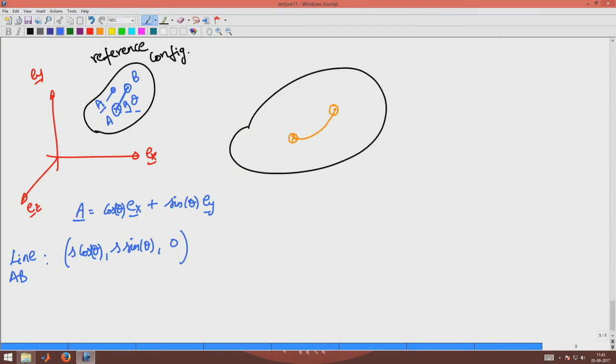Now this curve line AB, and here S varies from 0 to L, 0 to L_ref, where this is length of the line.